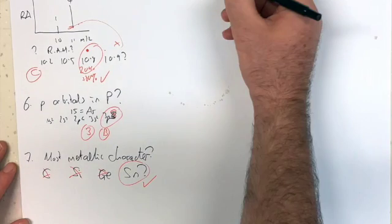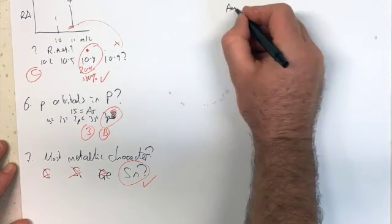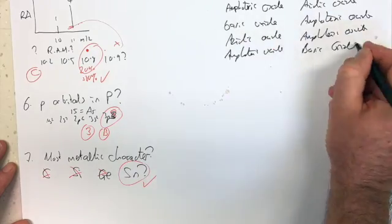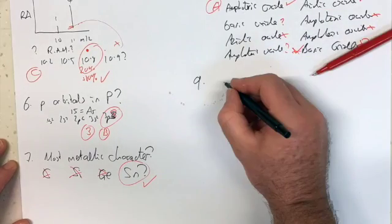Seven, most metallic is tin, germanium is semi-metal, silicon and carbon are non-metals. And then we have whether phosphorus or aluminium is amphoteric or acidic. Phosphorus is acidic, aluminium is amphoteric.